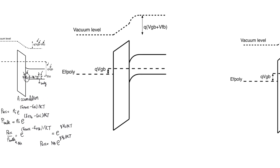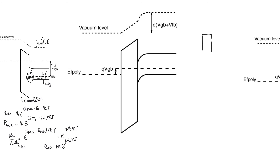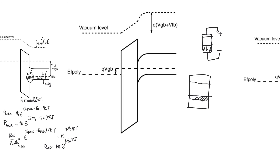Now let's see what happens to the band diagram when we apply a potential opposite to what we just applied. In this case, we apply a positive potential to the gate and a negative potential to the substrate or body. When we apply this positive gate potential, it creates an electric field that leads to the repulsion of holes from the surface of the oxide. When we push away enough holes, we form a depletion region below the surface of the oxide. If we keep applying more positive potential, we increase the thickness of this depletion region — we call this depletion mode.